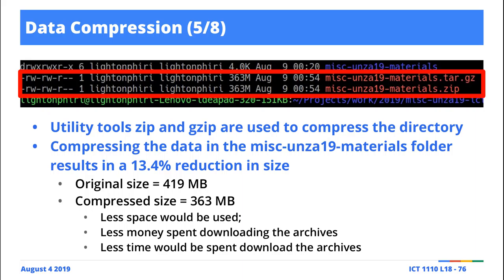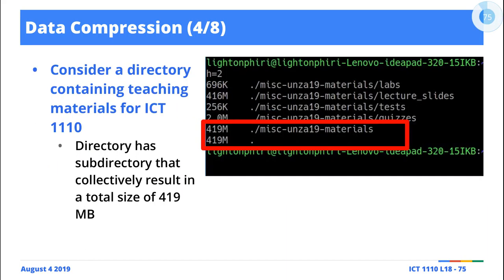But this difference could mean spending less money and occupying less space on your machine. You're not just looking at this course alone — what if other courses are similar in size? What if you want to archive this information for future years? You save space and spend less time transmitting data, whether over a network or to a flash drive. Moving 363 megabytes takes less time than moving 419 megabytes.